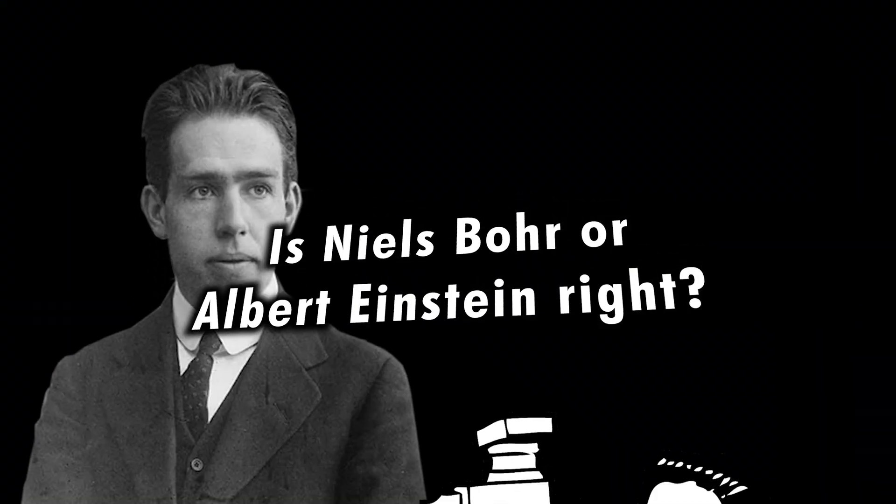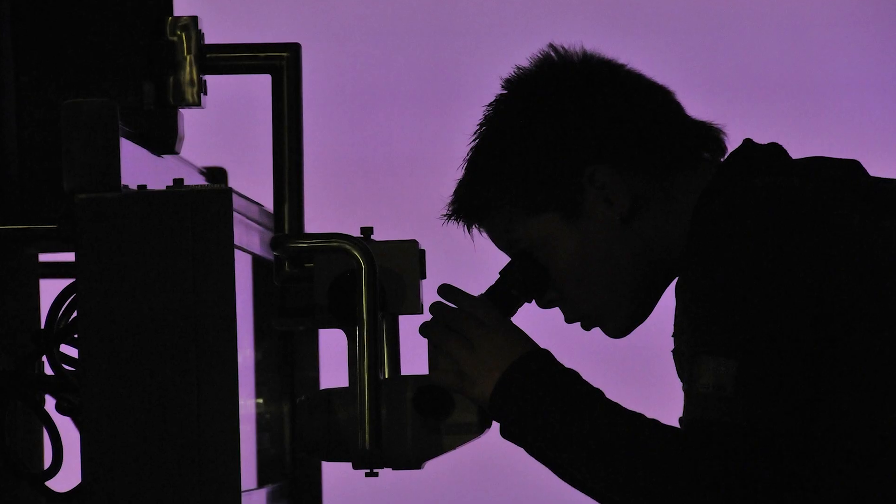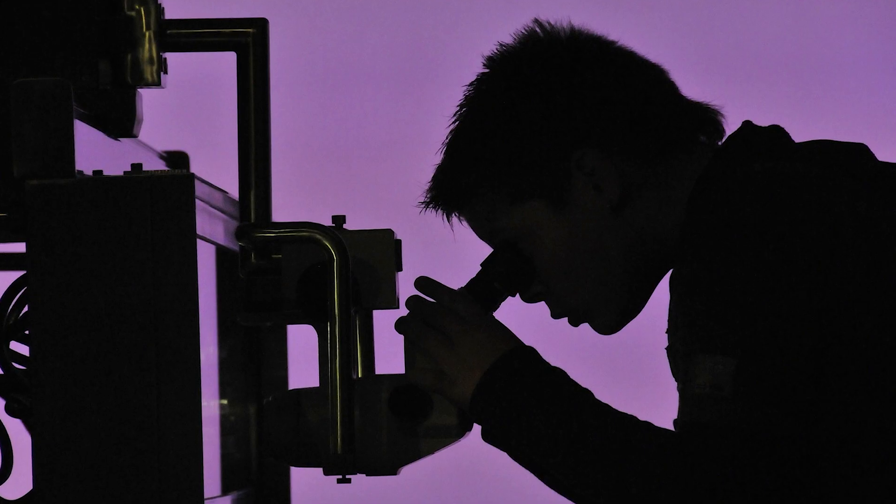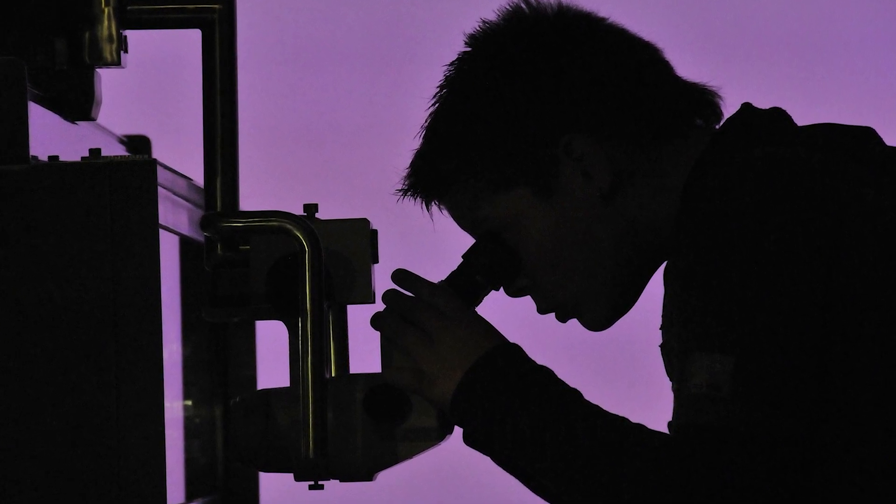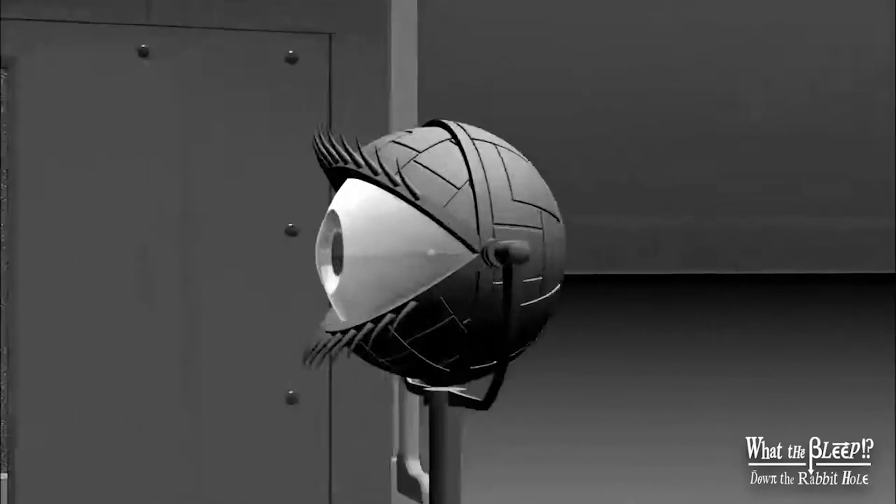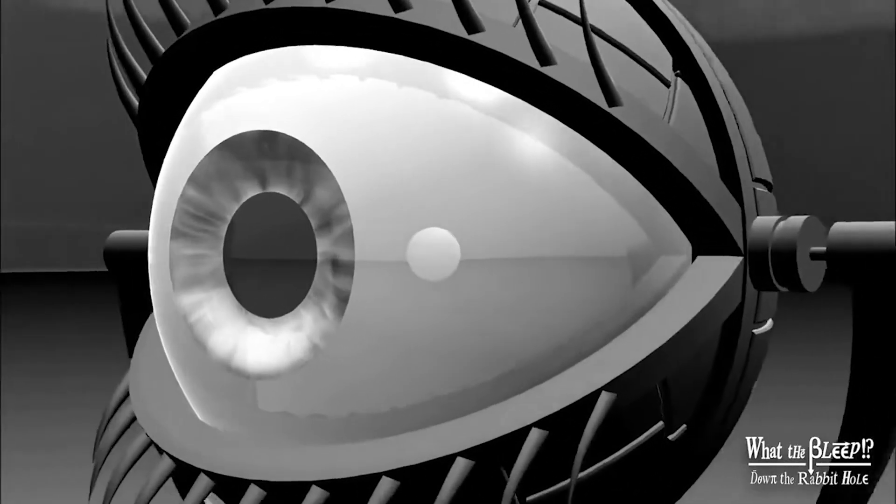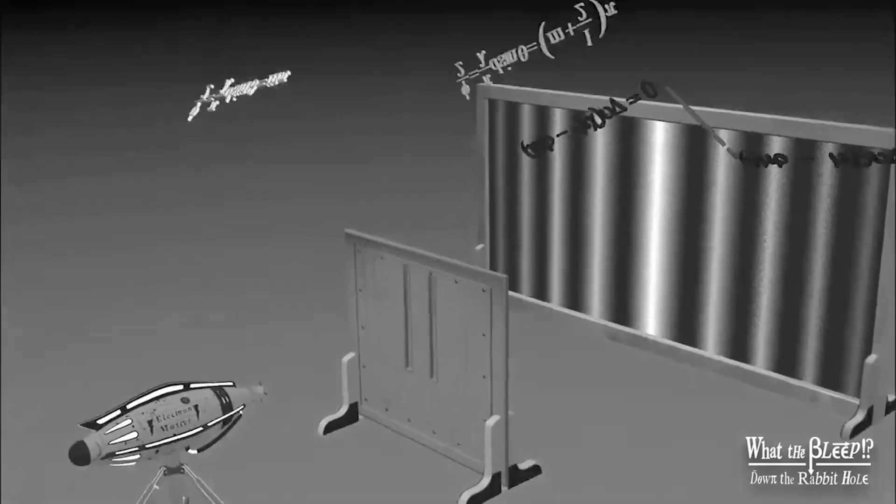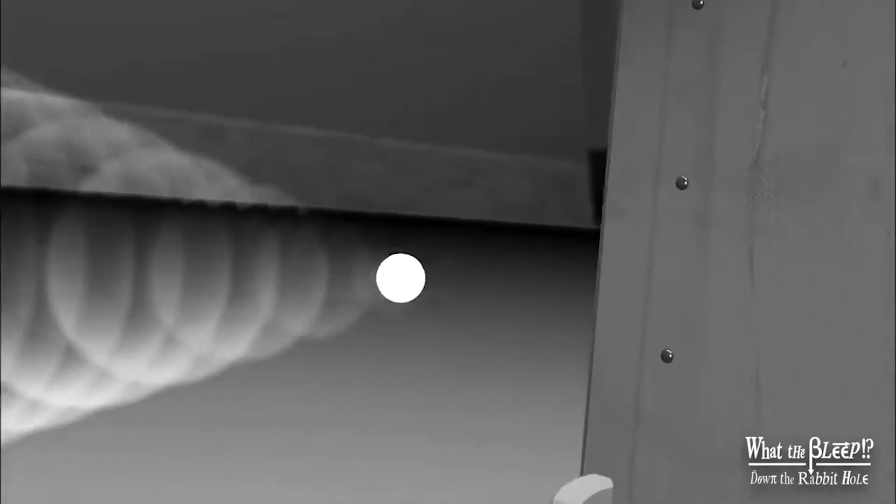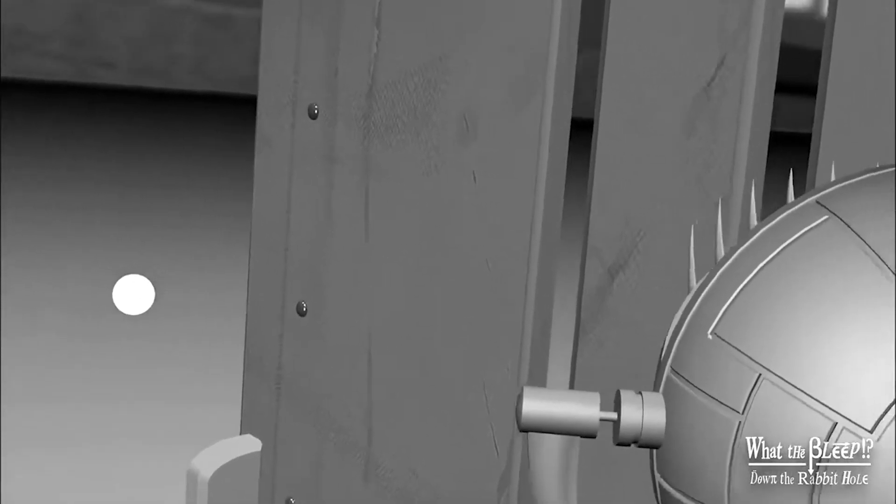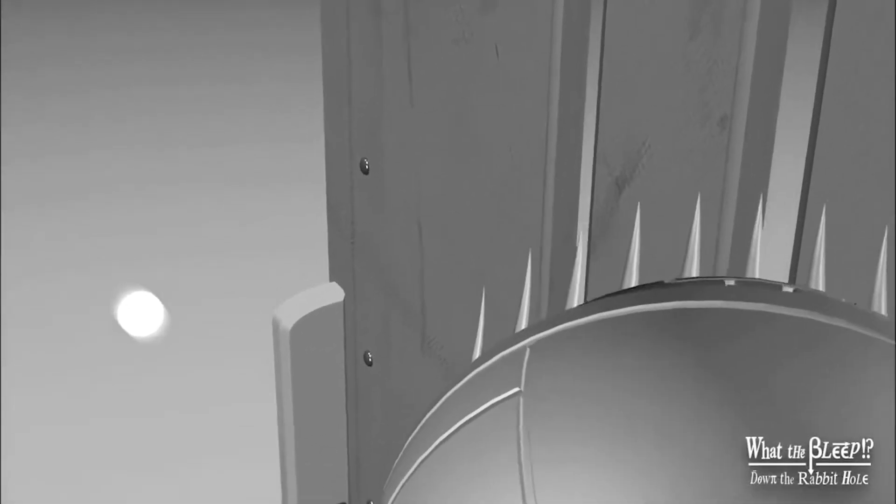Niels Bohr thought that measurement changed everything. He thought that before measuring or observing the molecule, its properties were uncertain. Before the detector could locate the electron, the electron could be everywhere in very different positions. They called this superposition. But when the measurement occurred, they seemed to force the electron to choose one of these different possibilities.